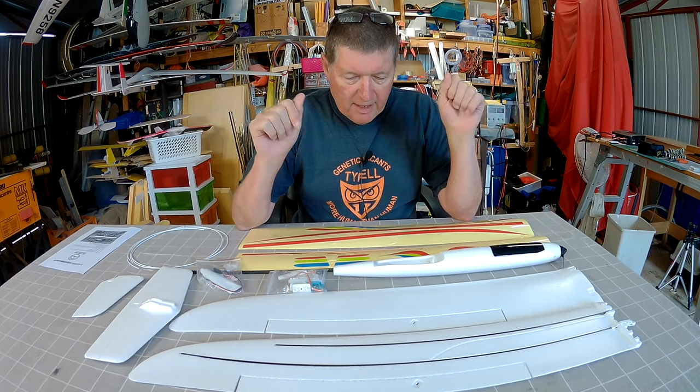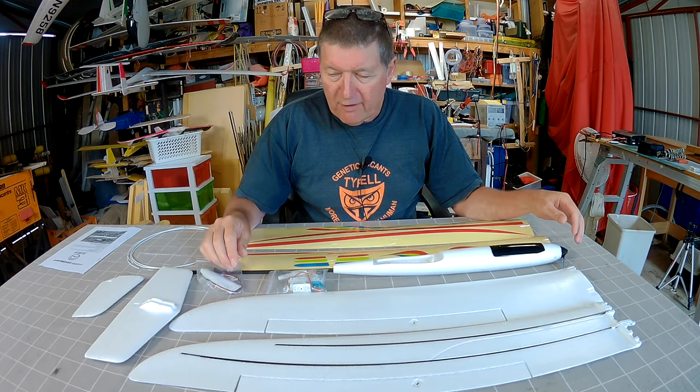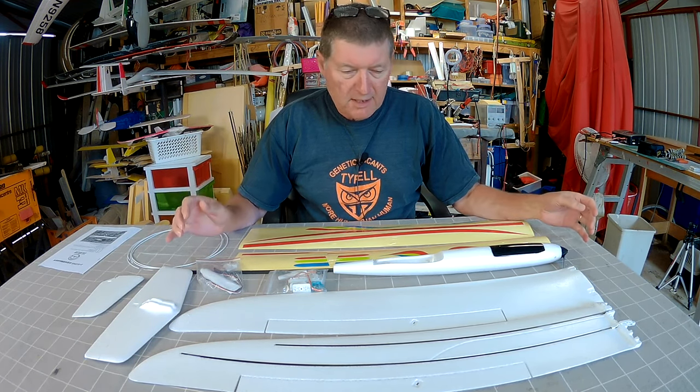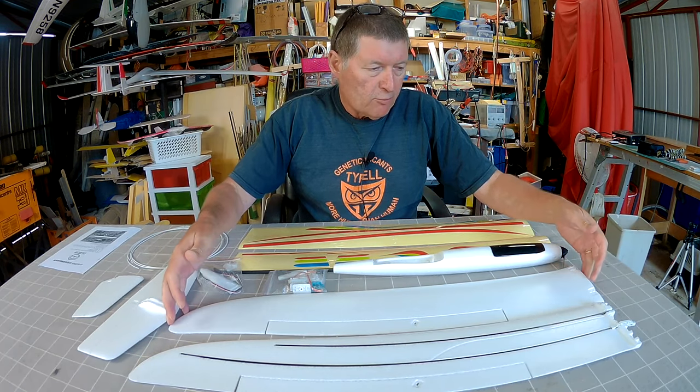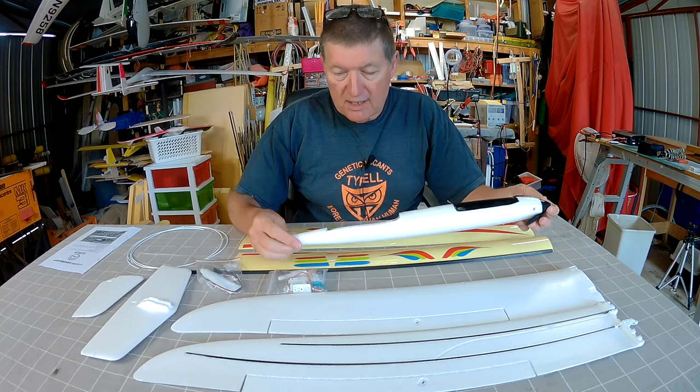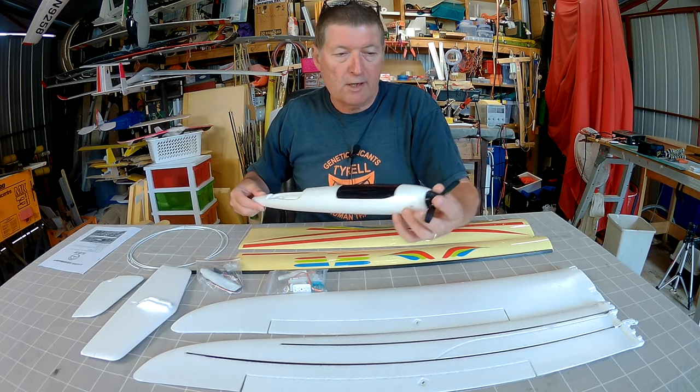Howdy folks, here we have another good looking plane from Banggood and Unique models. This is the U-Glider which is a 1500mm wingspan, really lightweight, really slim looking DLG style glider with a little motor.